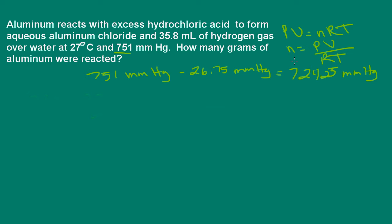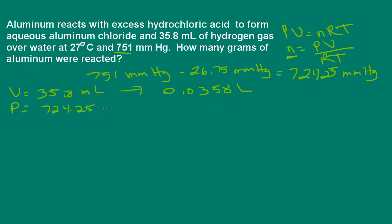We're all set to use the ideal gas law to solve for the number of moles of hydrogen, but first we need proper units: pressure in atmospheres, volume in liters, and temperature in Kelvin. The volume is 35.8 milliliters, which converts to 0.0358 liters. The pressure, 724.25 millimeters of mercury, converts using 1 atmosphere = 760 millimeters of mercury, giving us 0.95296 atmospheres.